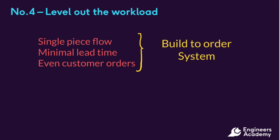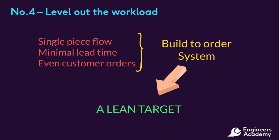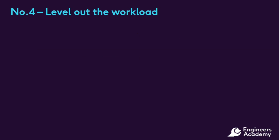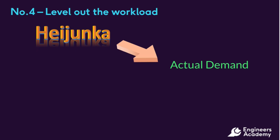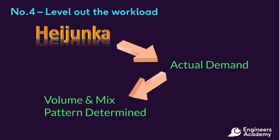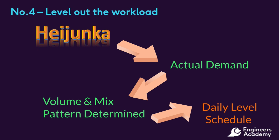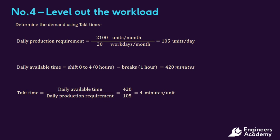This would be a build-to-order system. Although this is the target for lean, it is very difficult to achieve. Lean is about striving for perfection, so although we may not be able to build to order, it is necessary to have systems that take us in the right direction. Workable systems have been developed to deliver evenness and smooth the customer demand. The heijunka system works by determining the actual demand, and a volume and mix pattern are determined from this to create a daily level schedule.